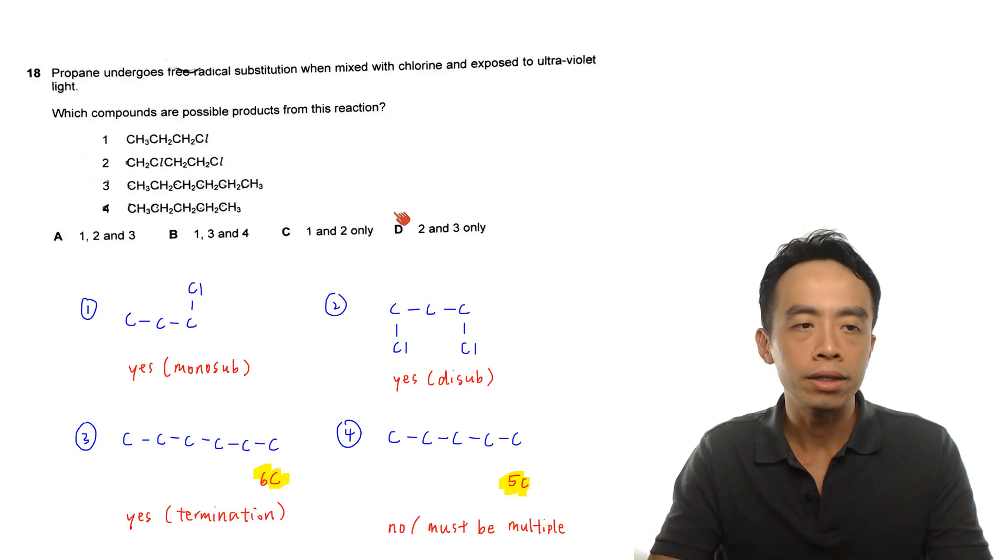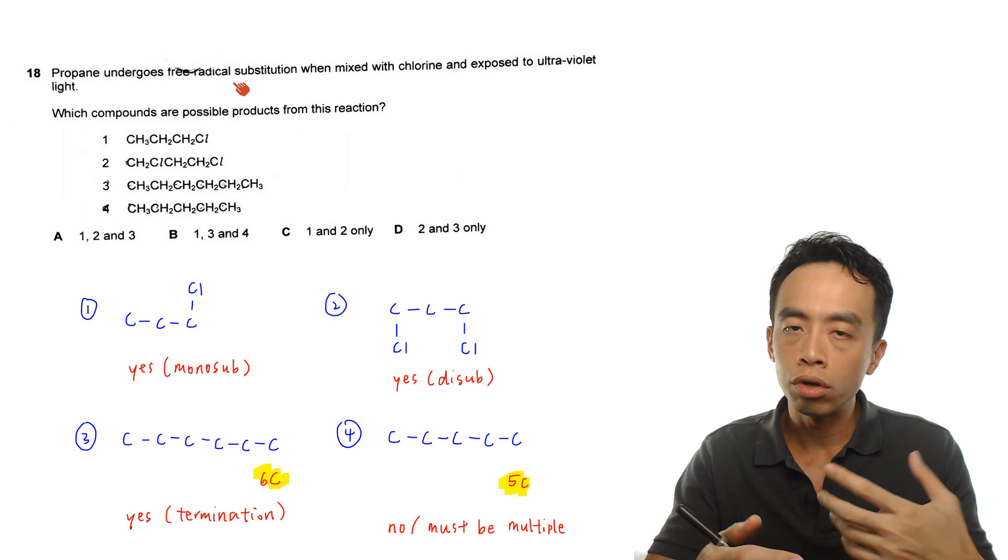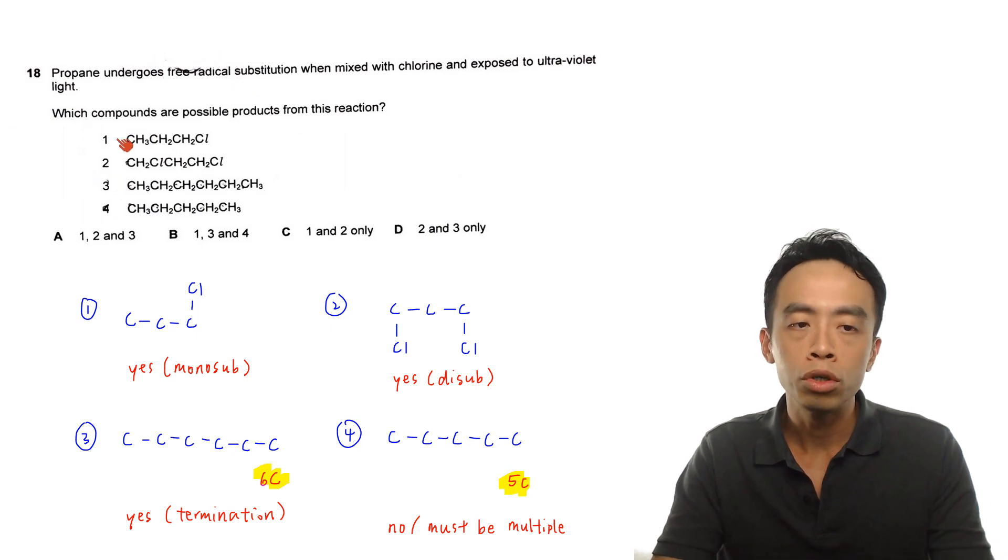Alright, question 18 goes something like this. Propane undergoes free radical substitution when mixed with chlorine and exposed to ultraviolet light. Now this mechanism is explicitly mentioned in syllabus involving the free radical substitution of alkanes, so in general we should be familiar with this. So which compounds are possible products from this reaction?